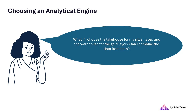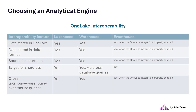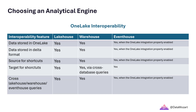Now, things become more complex. What if I choose the lake house for my silver layer and then the warehouse for the gold layer? Can I combine the data from both the lake house and the warehouse? This is a very common question asked by data professionals considering or already using Microsoft Fabric. Hence, in this table you'll find an overview of the interoperability between various analytical engines in Fabric.